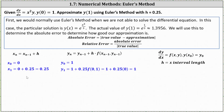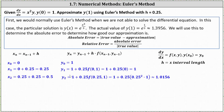Now we determine x sub 2 and y sub 2. x sub 2 equals x sub 1 plus h, which is 0.25 plus 0.25, or 0.5. y sub 2 equals y sub 1 plus h times f of x sub 1 comma y sub 1, giving us 1 plus 0.25 times f of 0.25 comma 1. f of 0.25 comma 1 equals the square of 0.25 times 1, so y sub 2 equals 1 plus 0.25 times 0.25 squared times 1, which is approximately 1.0156.